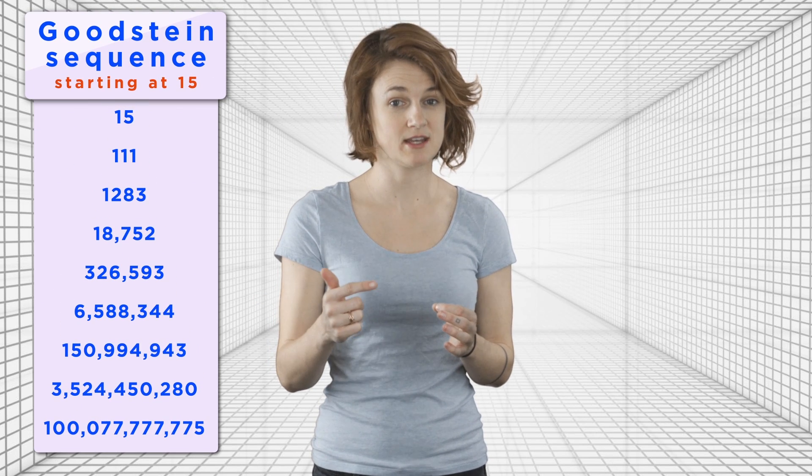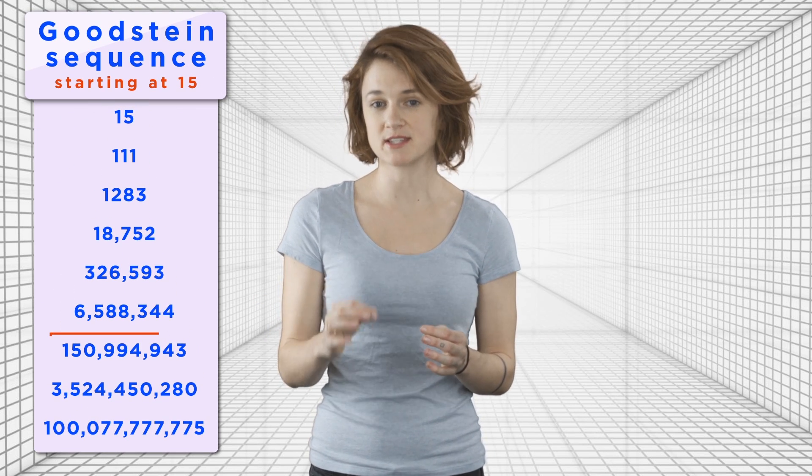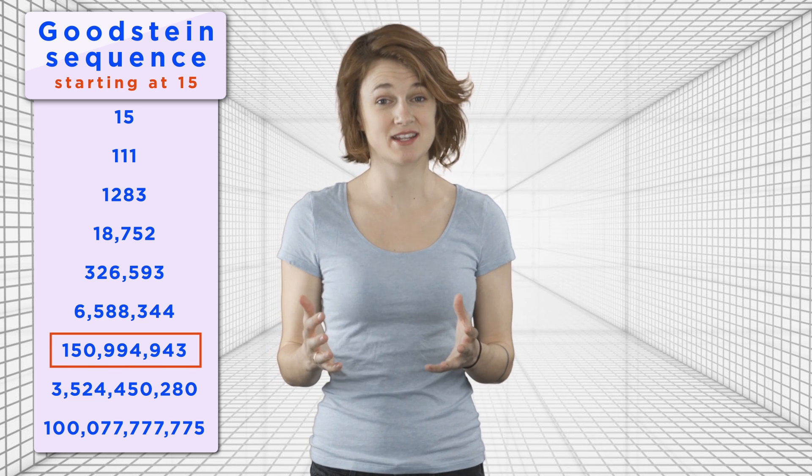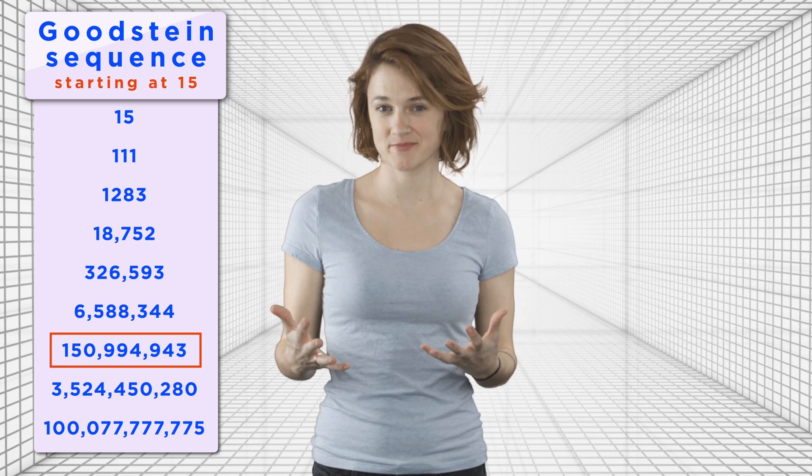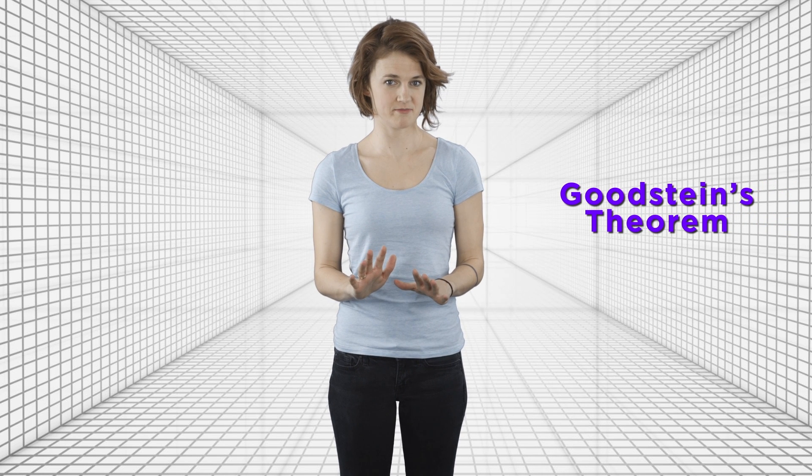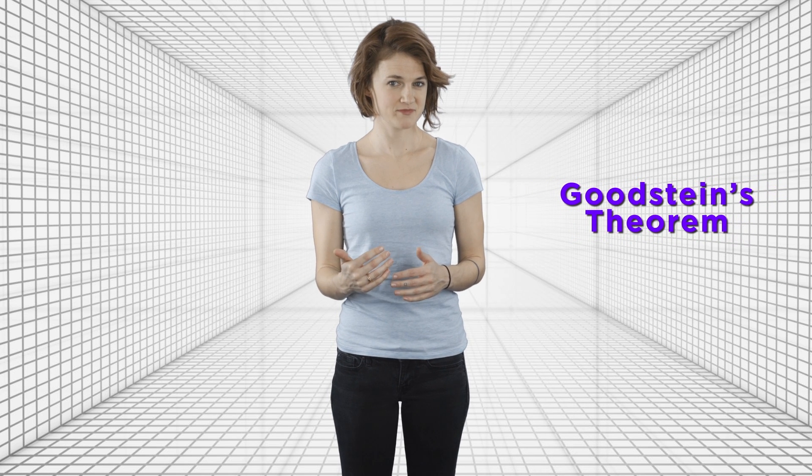Here's the Goodstein sequence that starts at 15. By the 7th term in the sequence, we're at 150 million. And it only keeps growing. But here's the totally amazing fact, called Goodstein's theorem. These sequences get bigger and bigger for a long time, but eventually they get smaller. And then the numbers keep shrinking, and eventually they hit 0 and terminate.